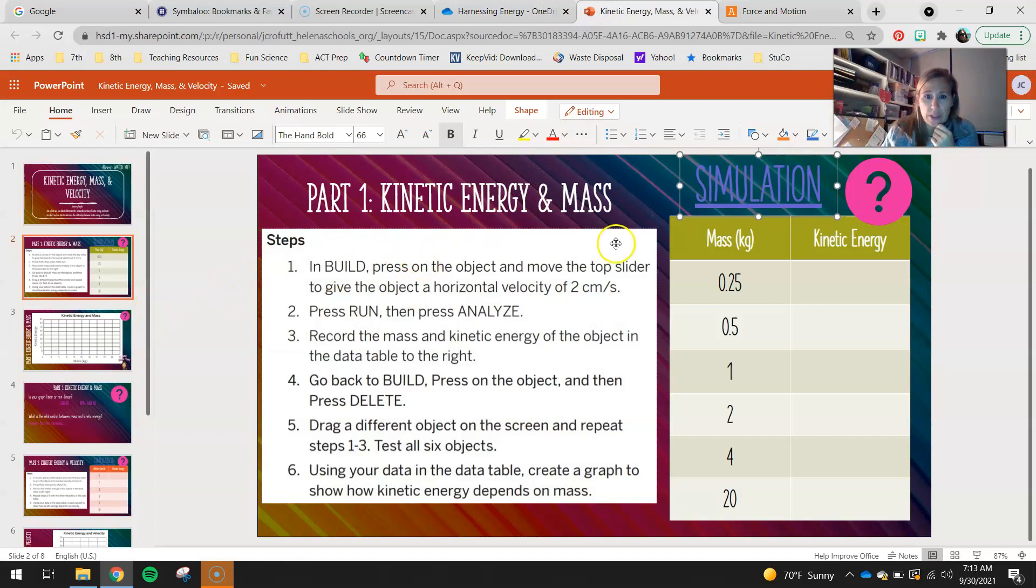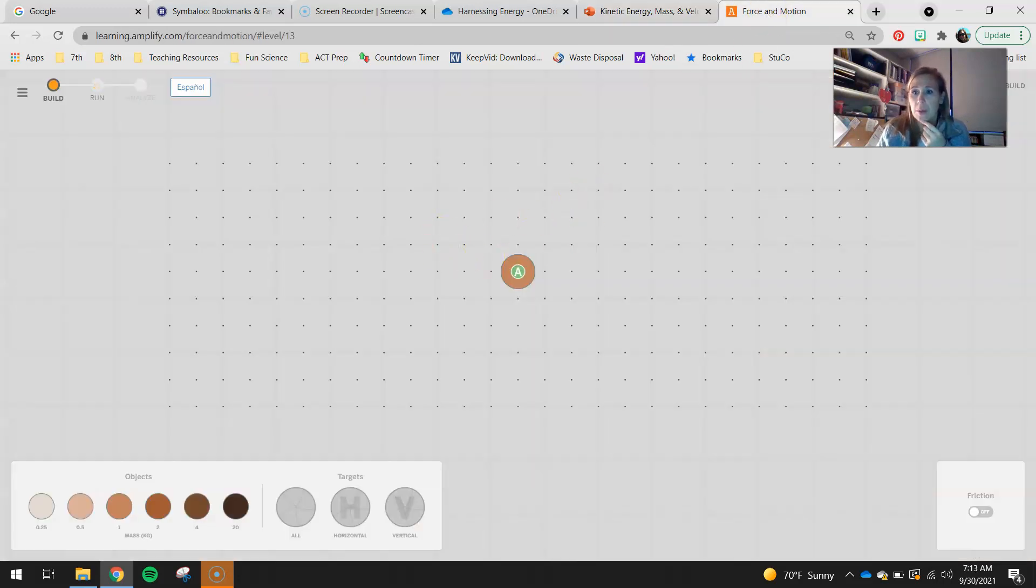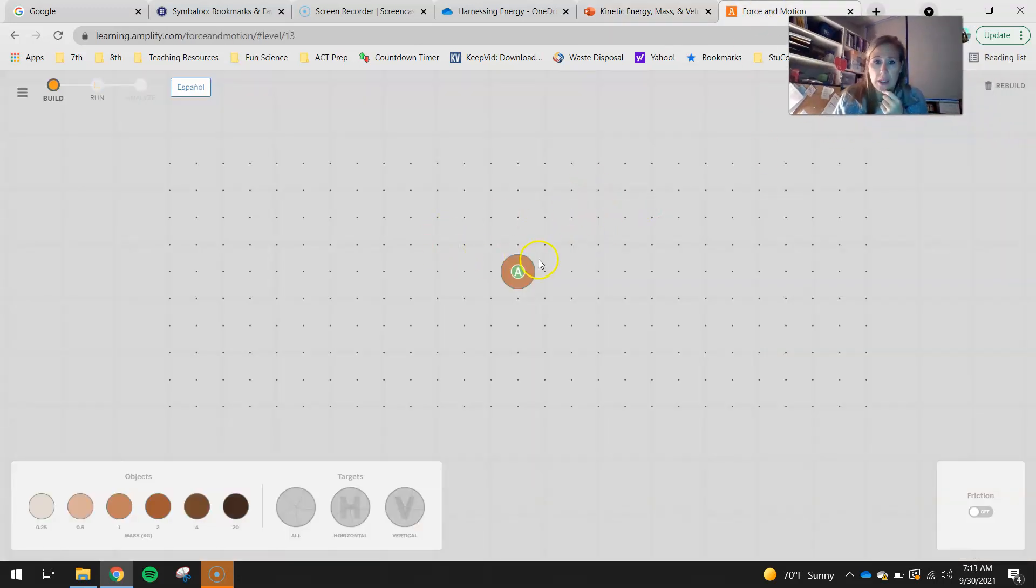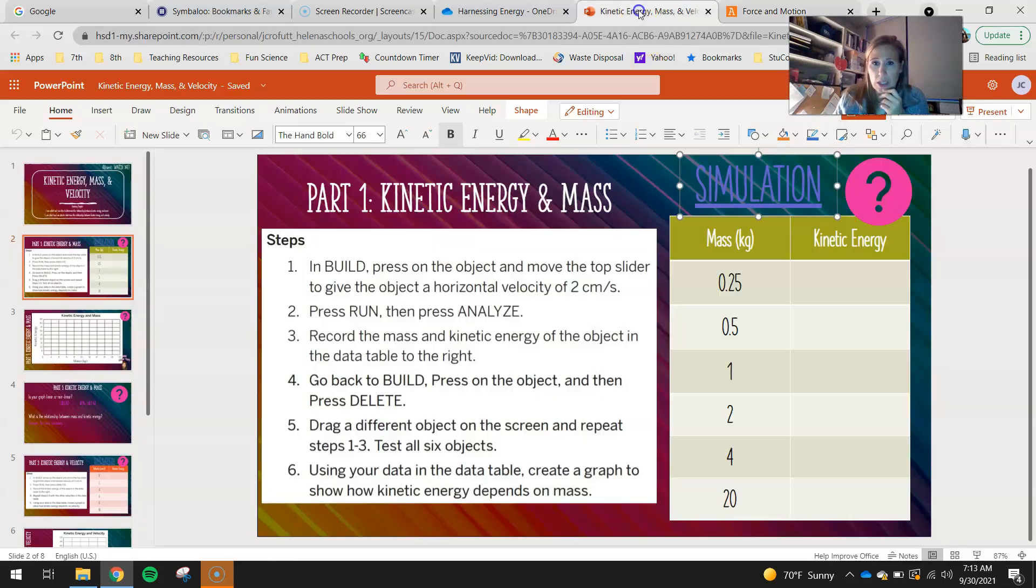With that being said, what you guys are going to do is you're going to be in the build portion of this simulation. You're going to press on the object and move the top slider to give the object a horizontal velocity of two centimeters per second. So I'm going to move this here so you guys can see everything. I'm going to go ahead and click on the object. Horizontal velocity should be two centimeters per second. So I can see right there, two centimeters per second. And each time you guys run this, it's going to be moving two centimeters per second because the only thing we want to change in this experiment is mass.